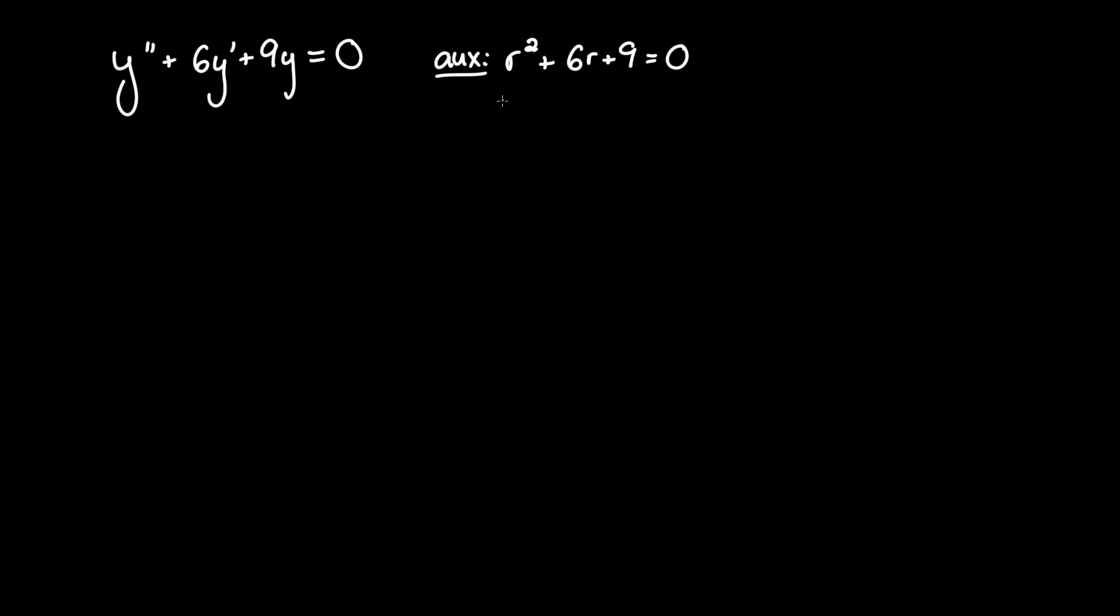So we need to solve for r, and to do so, we have to find out what multiplies to 9 and adds to 6. We can see that 3 and 3 together do that, so you can do r plus 3 squared, which will give you this whole term, equals 0.